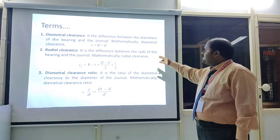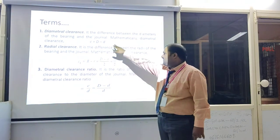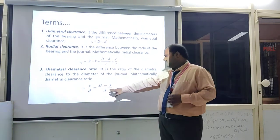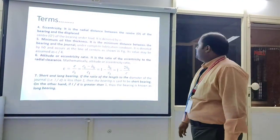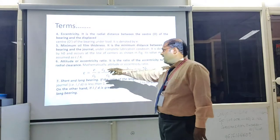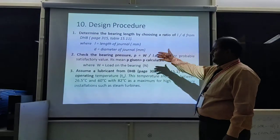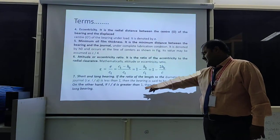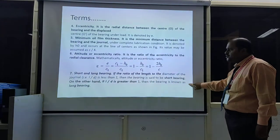The diametral clearance ratio is C/d = (D − d)/d. Eccentricity is the radial distance between the center of the bearing and the journal. Minimum oil film thickness is the minimum distance between the bearing and the journal, assumed as d/4. Attitude or eccentricity ratio is the ratio of eccentricity to radial clearance. For short and long bearings: if L/d is less than 1, the bearing is a short bearing; if L/d is greater than 1, it is a long bearing.